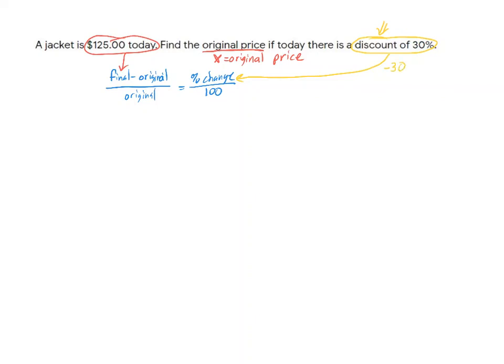So let's go ahead and throw these numbers in. We've got the final, which was 125, minus the original, divided by the original. And that needs to equal the percent change. The percent change, remember, was negative 30 over 100.